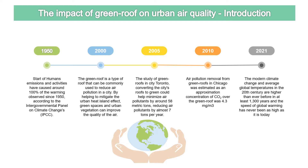In 2010, there is also a study of green roofs in Chicago where the concentration of carbon dioxide over the green roof was 5.3 mg per cubic meter. And in 2021, modern climate change data shows the average global temperature was higher than ever before in at least 1,300 years, and the speed of global warming has never been as high as it is today.